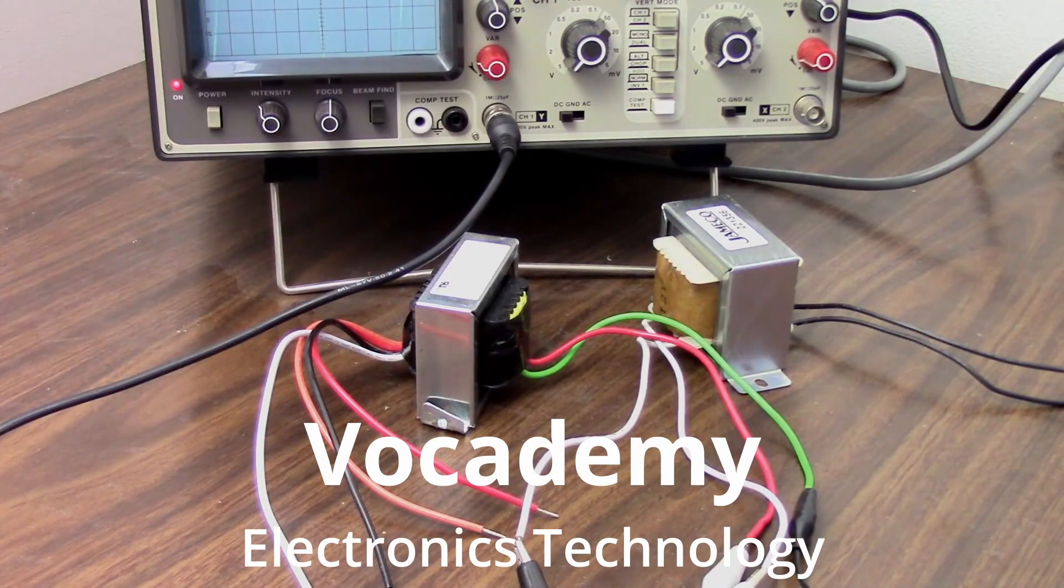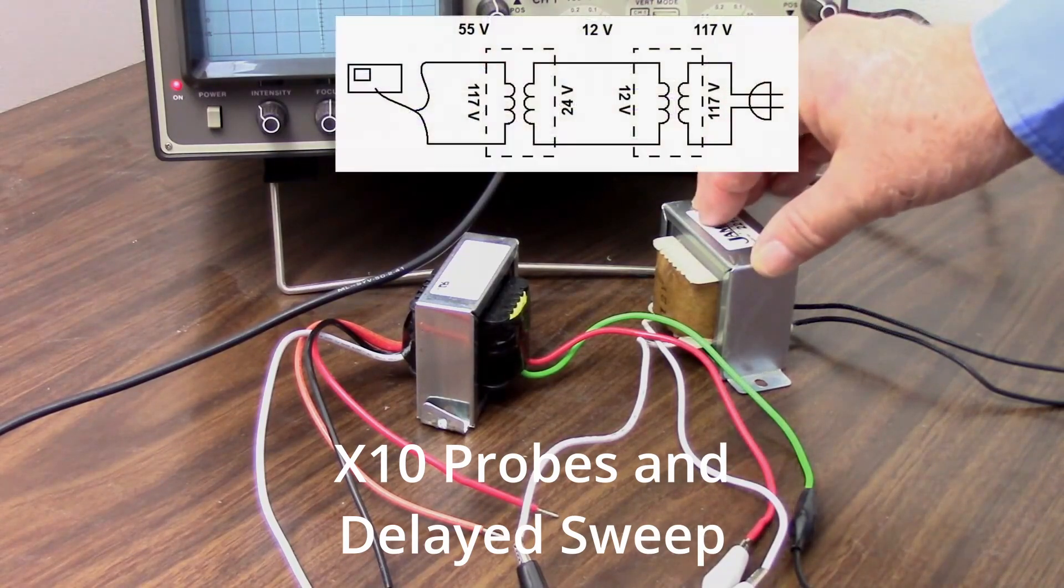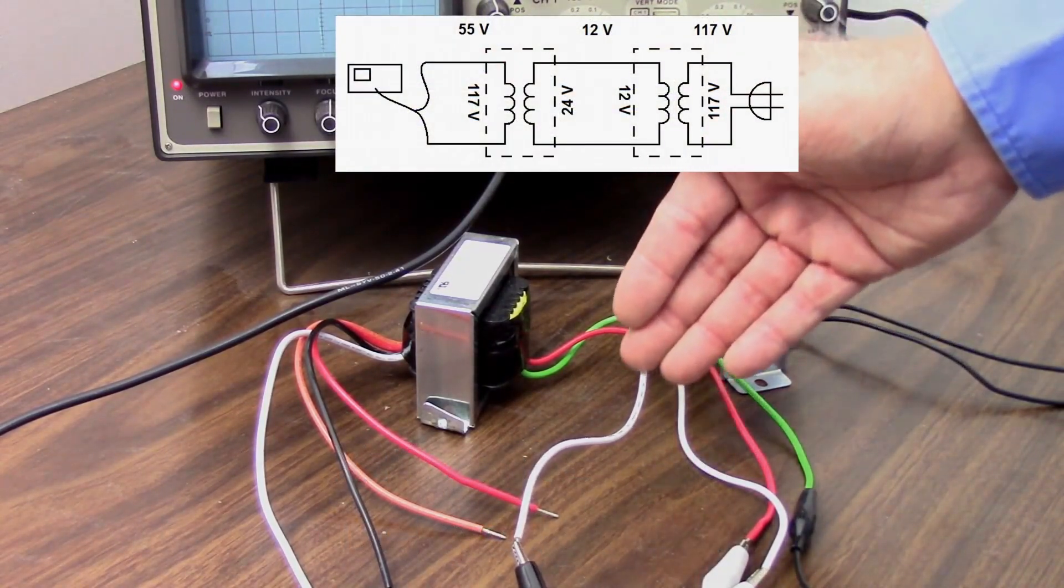I'm Bob Duhamel, and I have a rather interesting setup on my workbench here. I have 117 volts going into the primary of this transformer, which has a 12-volt secondary.